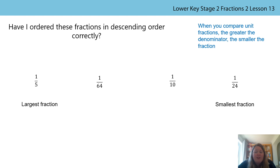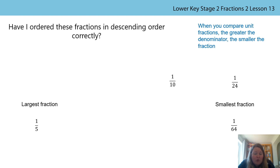Using my stem sentence, I know that one fifth is the largest unit fraction. One sixty-fourth is the largest denominator, so I know that means it must be the smallest fraction. Ten is a smaller denominator than 24, so one tenth is bigger than one twenty-fourth. So one tenth needs to come after one fifth, and one twenty-fourth needs to go in between one tenth and one sixty-fourth.